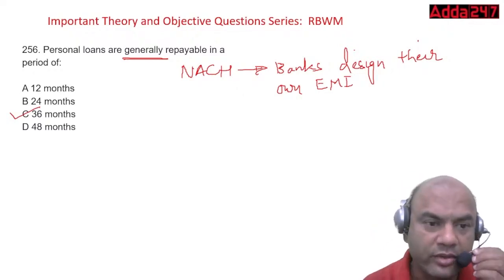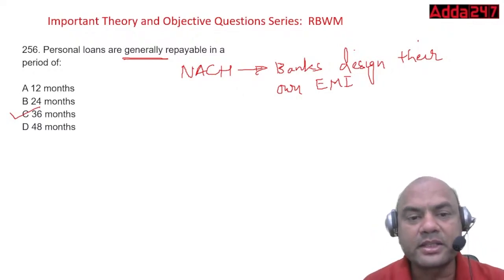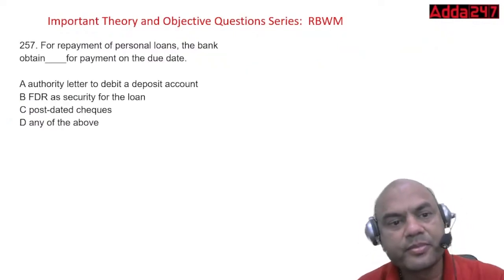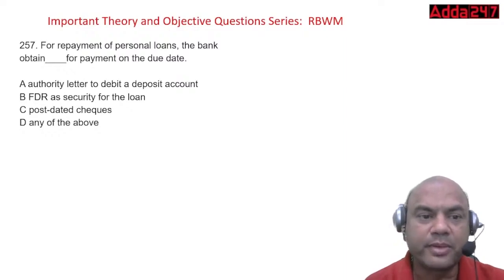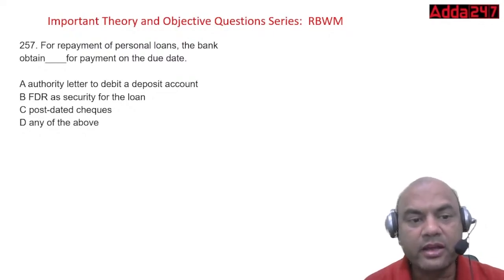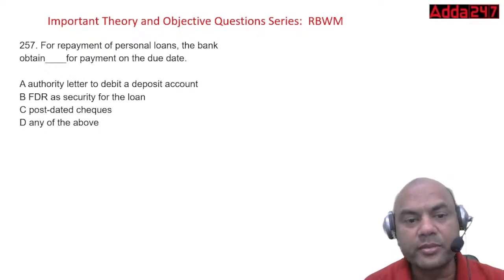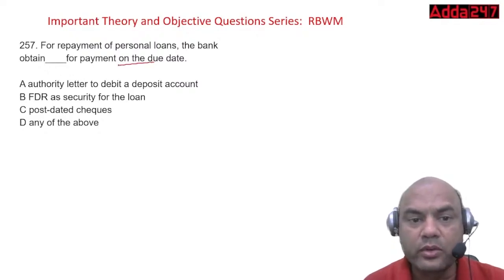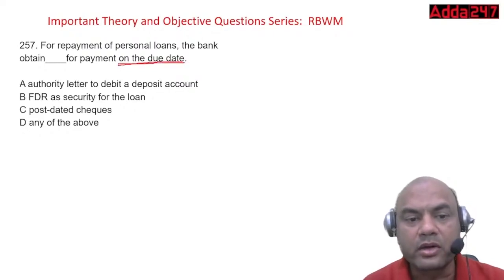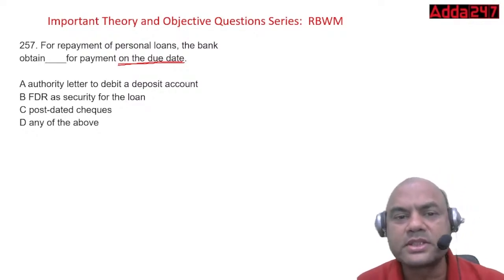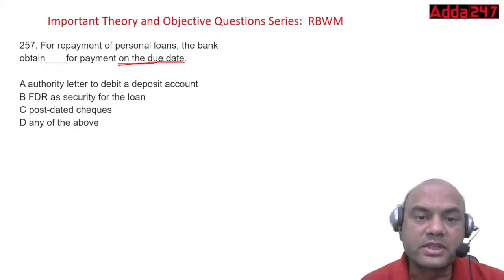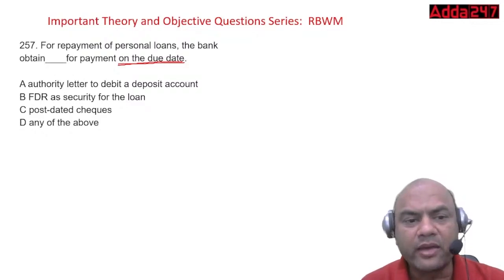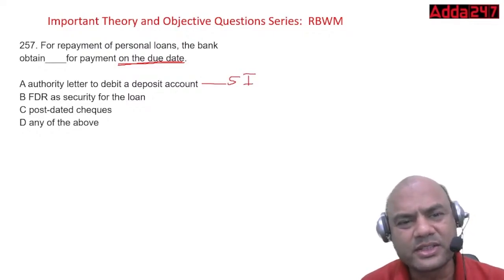PLs are generally repayable in a period of 36 months. For repayment, banks obtain an authority letter to debit the deposit account — also called a Standing Instruction (SI) nowadays. FDR as security is a separate matter. The SI is the mechanism used for payment on the due date.